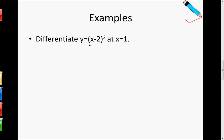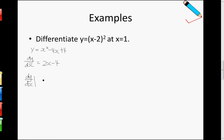For example, differentiate y equals to (x minus 2) squared, at x equals to 1. So if you have tried the questions from the previous video, you would probably encounter this. With your current knowledge, what you would actually do is expand this thing out. After expanding, you should get x squared minus 4x plus 4, and then differentiate from here to get 2x minus 4. So dy/dx at x equals to 1 would be equal to negative 2.